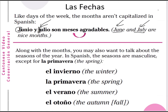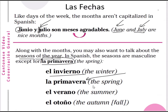Along with the months, you may also want to talk about the seasons of the year. In Spanish, the seasons are masculine except 'la primavera' (the spring). So we have: el invierno (the winter), la primavera (the spring), el verano (the summer), el otoño (the autumn or fall). Only spring is a feminine noun; the others are masculine.